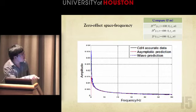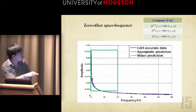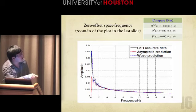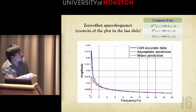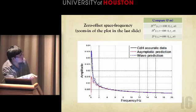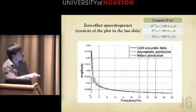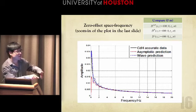To zoom in, we see the frequency from zero to 20 hertz. Again, the black line represents the exact Cagniard-de Hoop data, the blue line represents the results from the wave, and the red represents the results from the asymptotic. You can see, at the low end, the wave can predict well. However, the asymptotic goes directly down to zero.